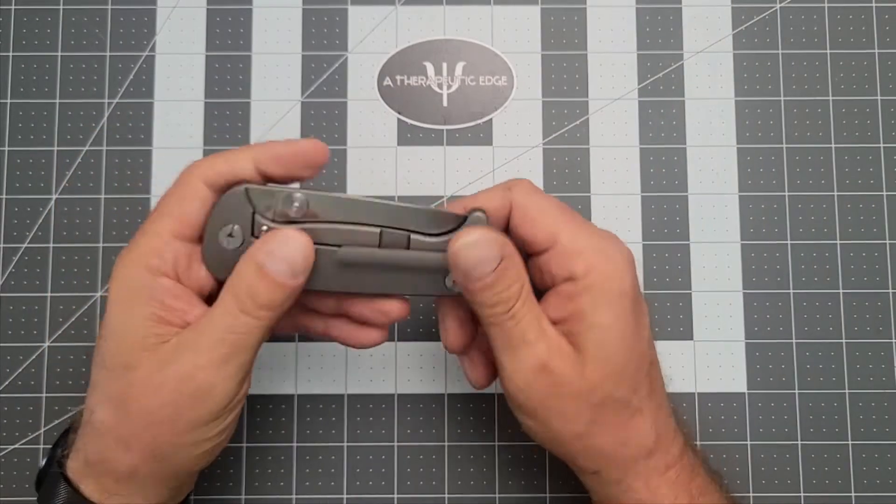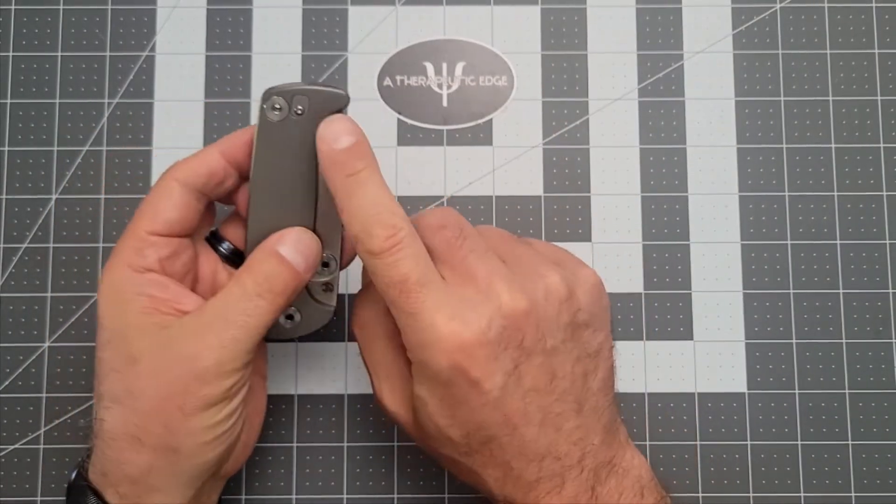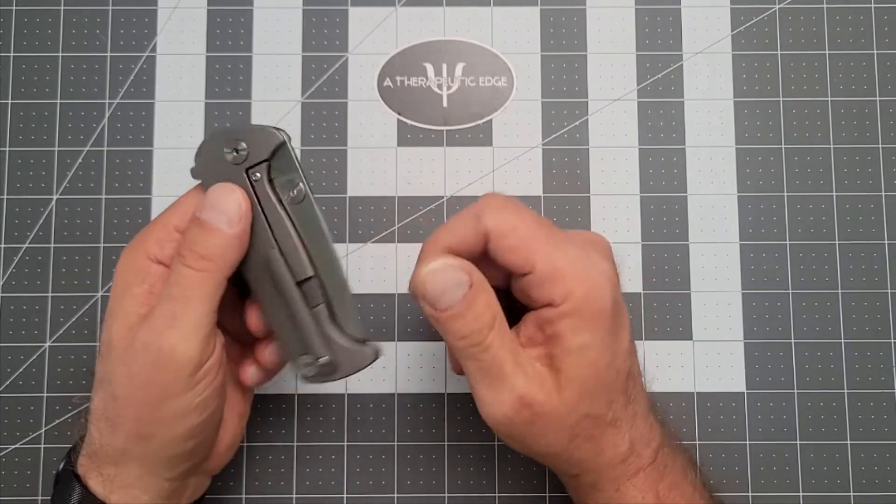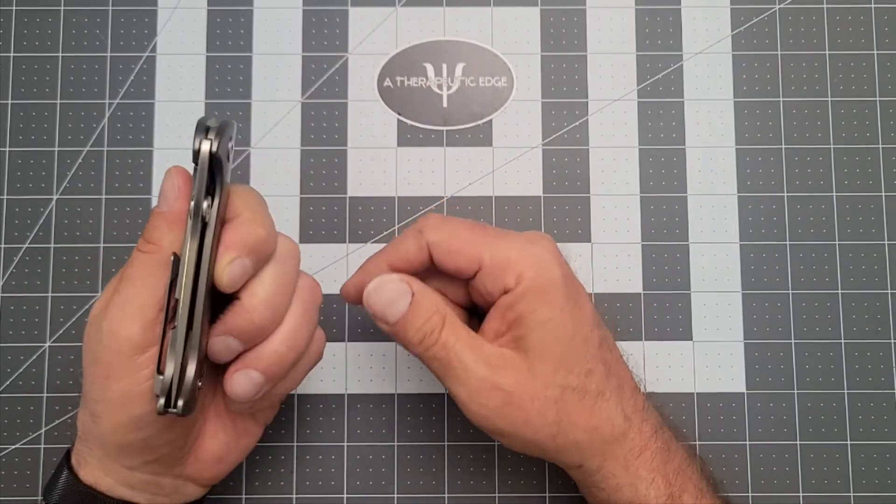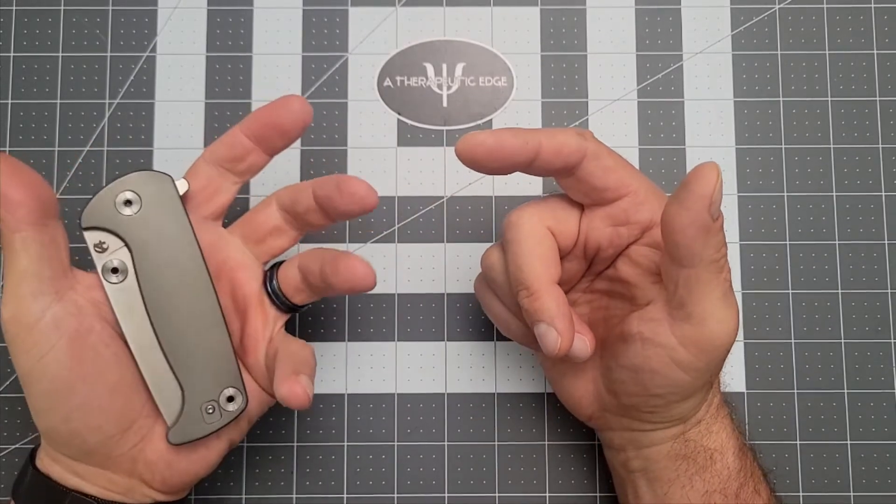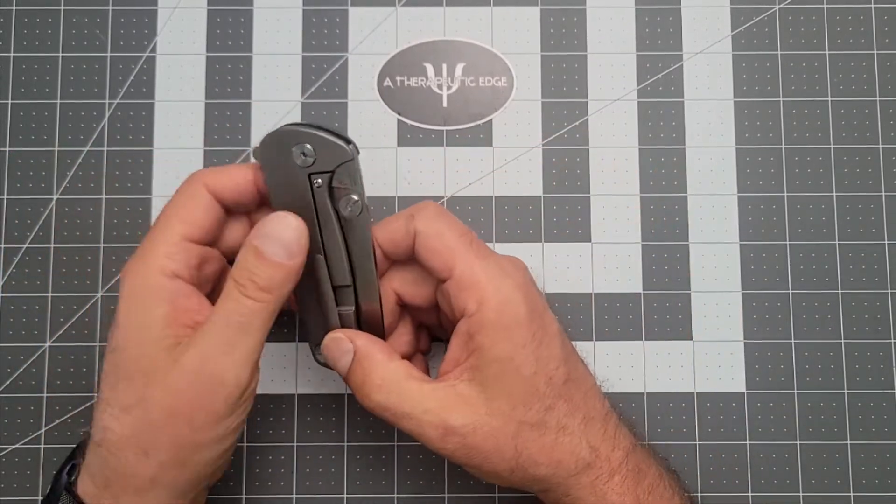It is a reversible clip. You can see there's this little tab right here, which is nice. You can remove that and flip the clip, but again, because it's a frame lock, you're not really going to be able to change much except what side the clip rides on. But that's cool for the lefties out there. I've seen a lot of lefties that are very fast with that.